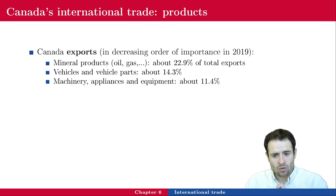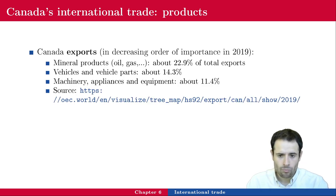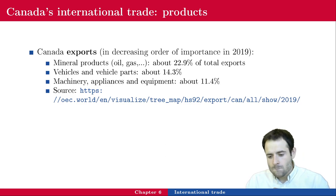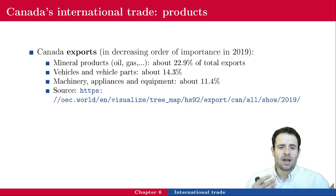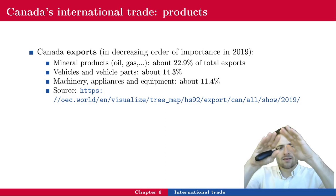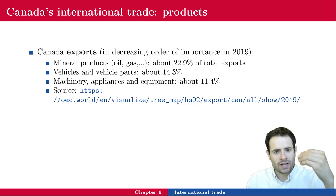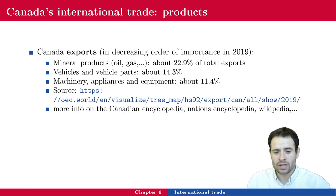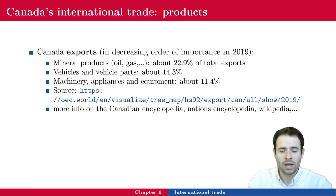Machinery, appliances, and equipment represent about 11.4% of Canada's exports. For more detailed numbers, there is a website with a very user-friendly visual interface where you can see each product for each country over different years, look at partners instead of products, and narrow down categories. You can also find more information on the Canadian Encyclopedia, Nations Encyclopedia, and Wikipedia.